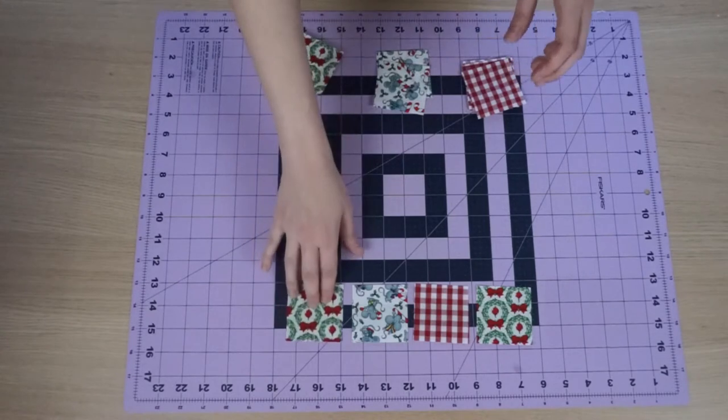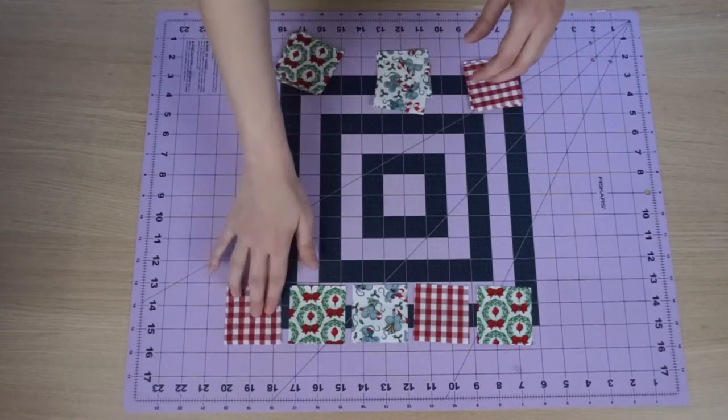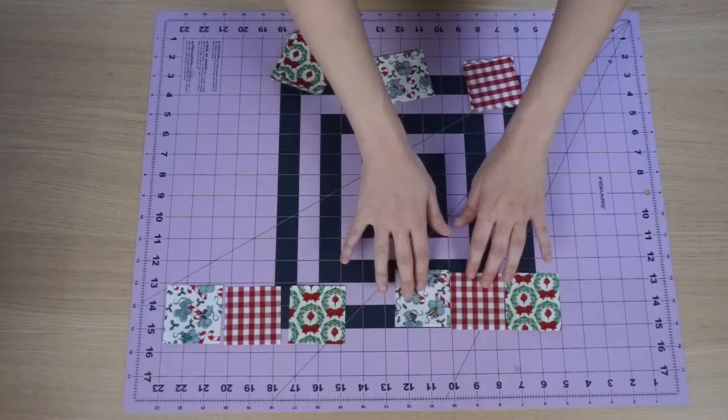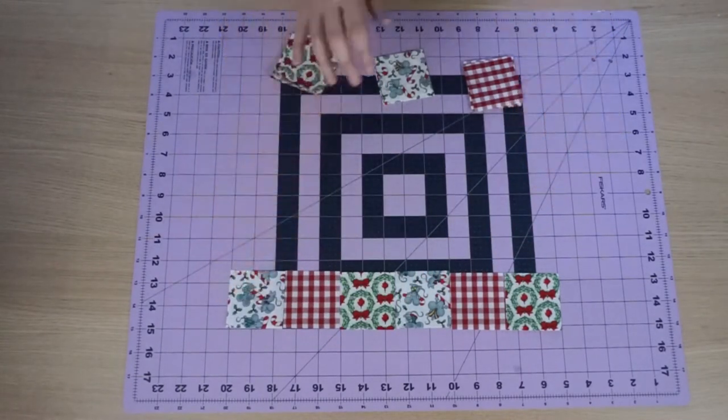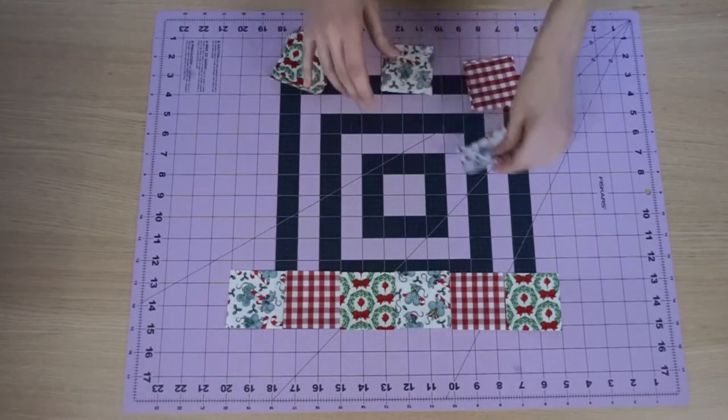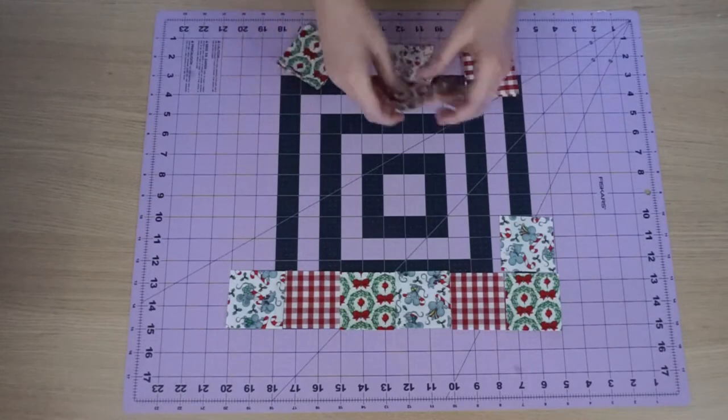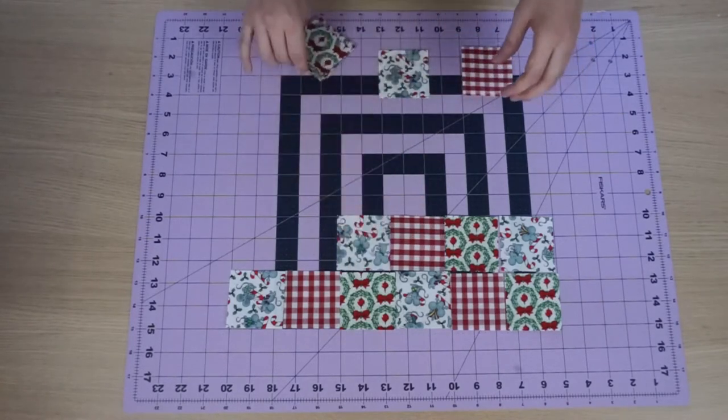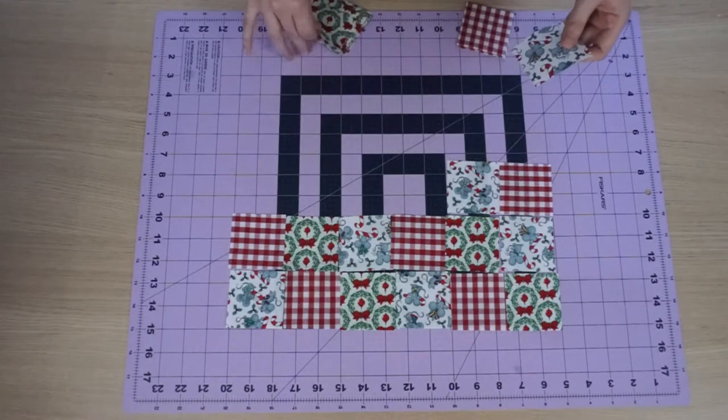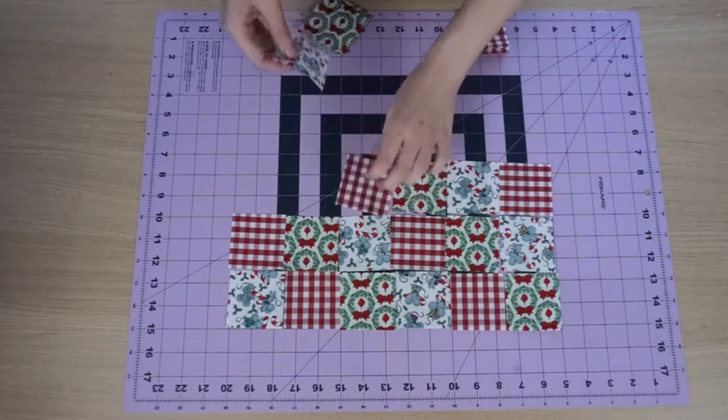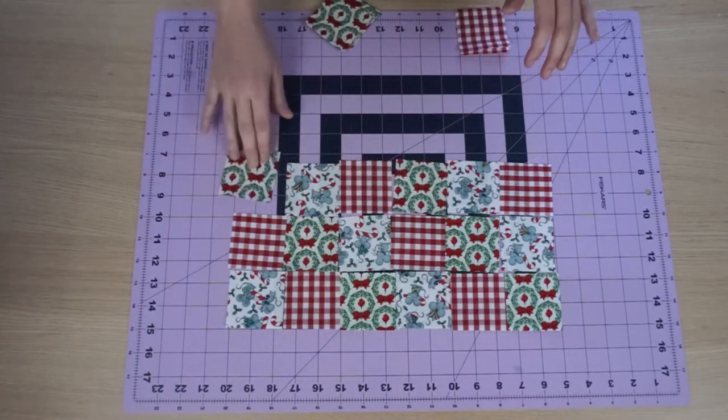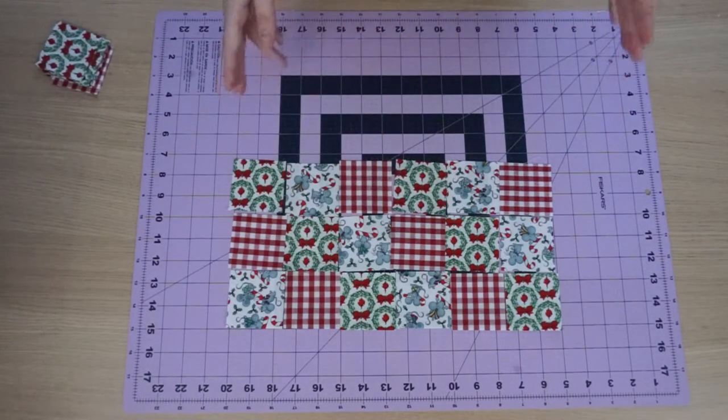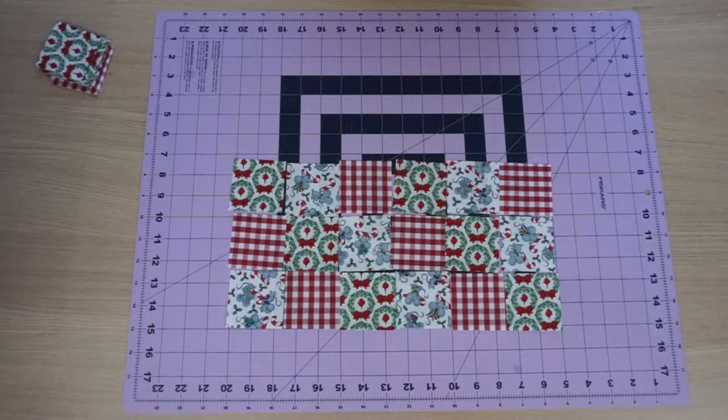So this can take some trial and error depending on what size your stocking is going to be. I've already made a stocking, so I know that for the size that I want, using a quarter inch seam allowance, a six by seven square, or six across and seven down is the size that I need. It looks like I've run out of fabric to go any further than this line. So you guys understand what I'm trying to do here. You're just going to kind of lay out your fabric so you know how you want it to look.